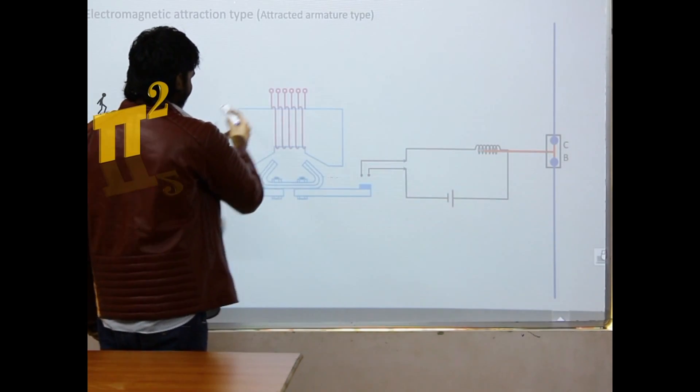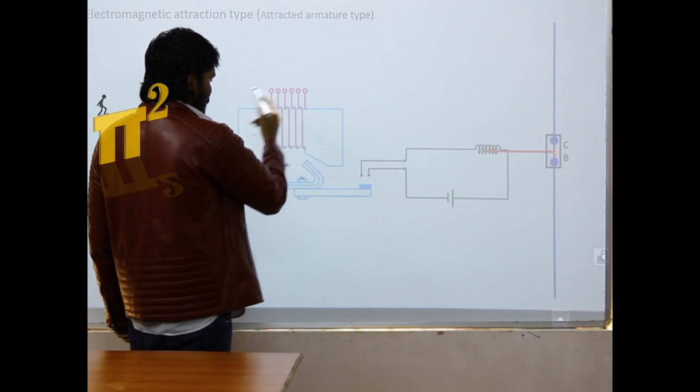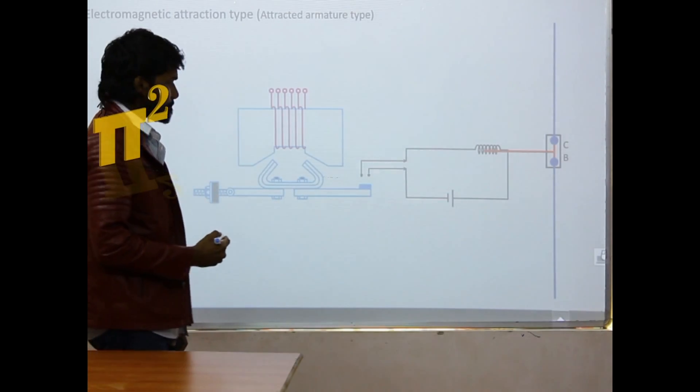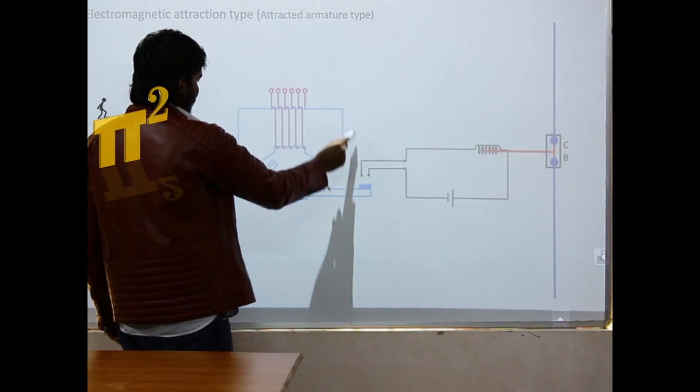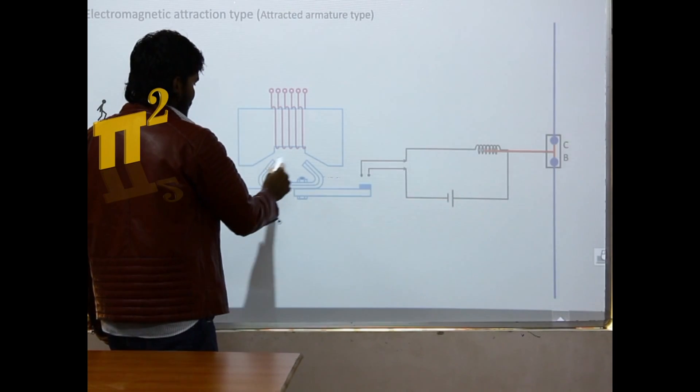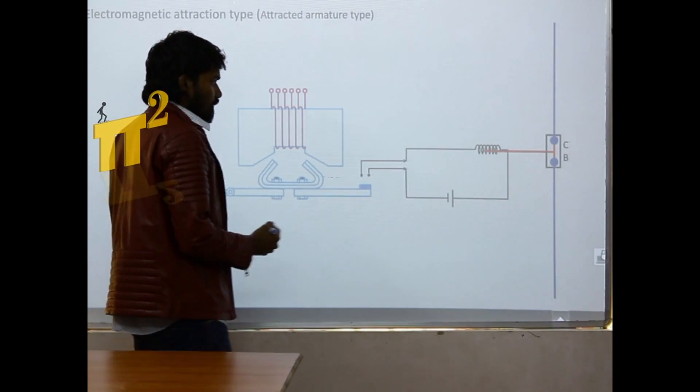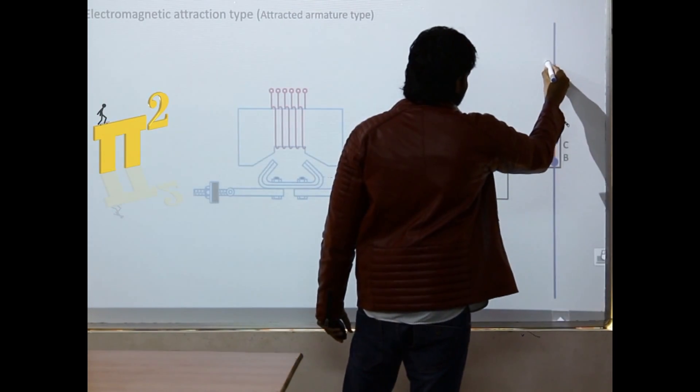Electromagnetic attraction type relay. We have an electromagnet here. This is an iron bar. Now we have a CT in the line, a current transformer.